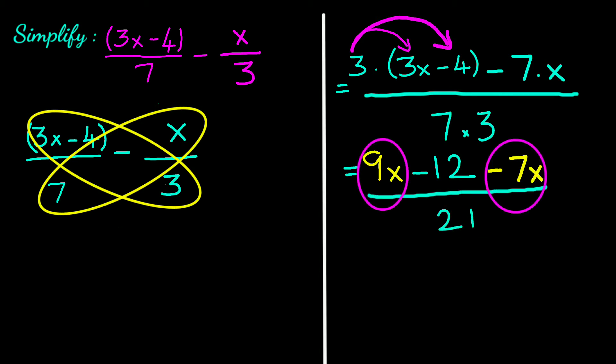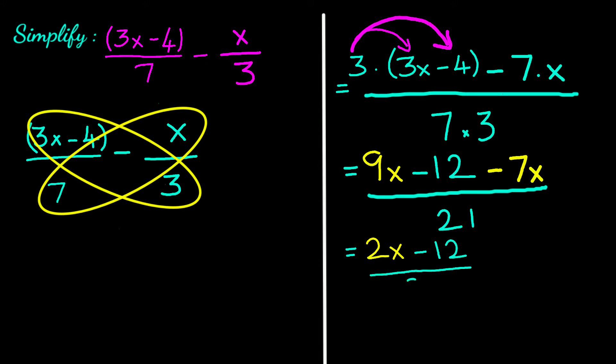Here, positive 9x and negative 7x are like terms. 9 minus 7 is 2, so we have 2x minus 12 divided by 21.